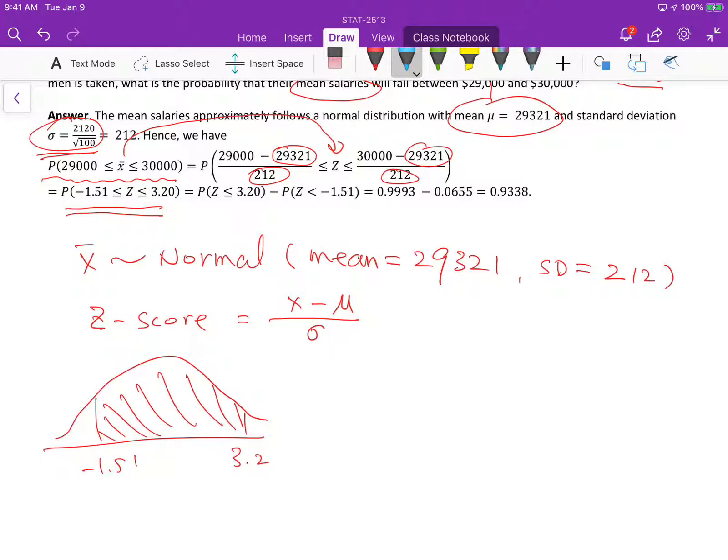first calculate the probability in this whole area. So this is just z smaller than 3.2. Then subtract the probability in this small area. So this is the probability of z smaller than negative 1.51.